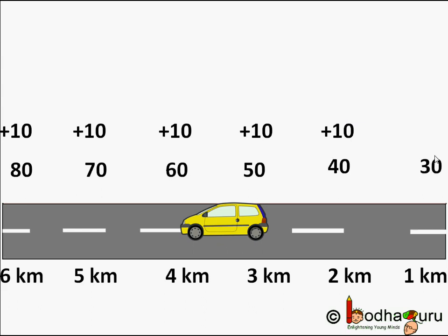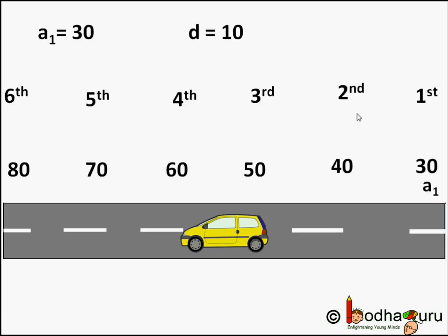Such a list of numbers is called an arithmetic progression. Each number — that is the fare in this case — is called a term. In an arithmetic progression, a fixed value is added to get the next term. That fixed value, which is 10 rupees in this example, is the common difference between the successive terms.